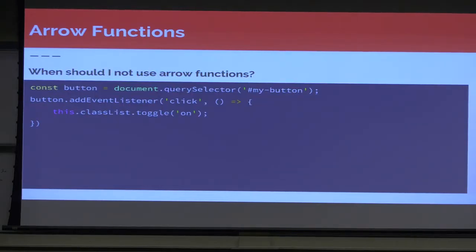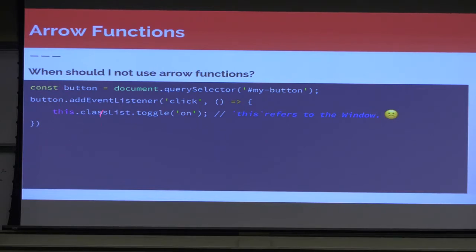When should I use arrow functions though? It's not always appropriate. Take this example: we have a button equal to our querySelector of my button, and we're adding an event listener for click doing this.classList.toggle. That looks right, but 'this' is referring to the window, because we're not within a scope that tells us what our 'this' is. So if it's going to pick up its 'this' based on its surroundings, there's nothing that tells it what it should be. For an example like this, it's not proper to use an arrow function — you would just use a regular function so that the value of 'this' would be your button.